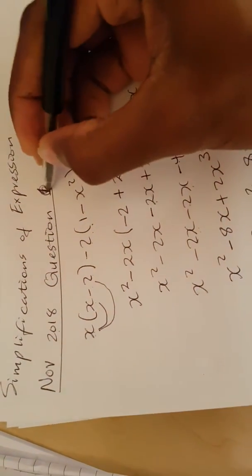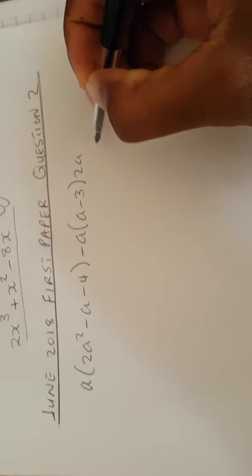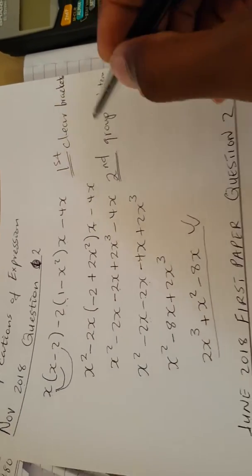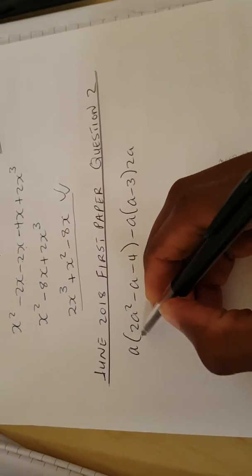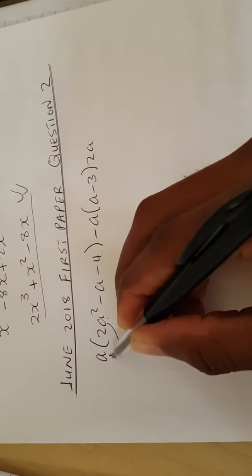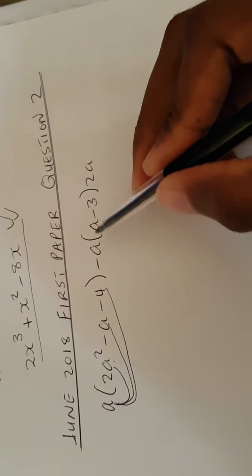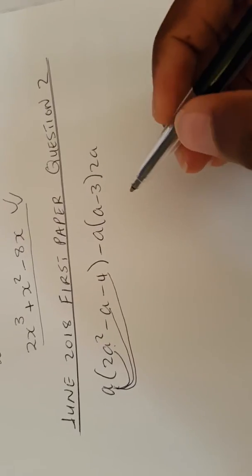Let's move to May/June 2018 first paper, question number two. We're going to simplify this expression. First thing first, we clear the bracket. This 'a' will multiply three separate things inside the bracket, so all variables inside will be multiplied by 'a' separately. This bracket is also going to be multiplied by the two terms outside it.